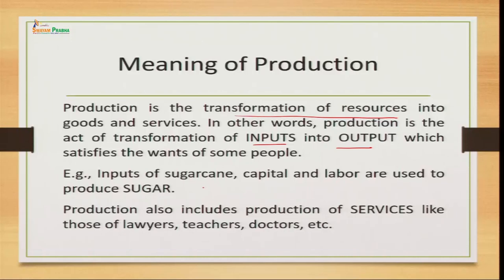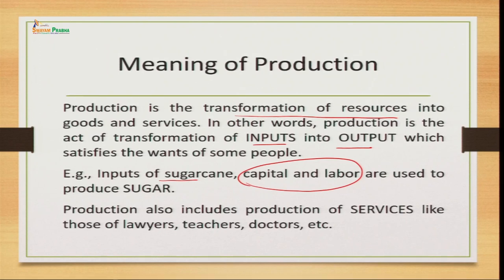For example, inputs of sugarcane, capital, and labour are used to produce sugar — sugar is the refined form we use, made from sugarcane as the raw material, converted using capital and labour. Production also includes the production of services, not only physical goods. We have service industries: lawyers, teachers, doctors — they also provide services which give utility to people. In short, production is a process of transformation where we transform inputs into output to satisfy the needs and wants of consumers.